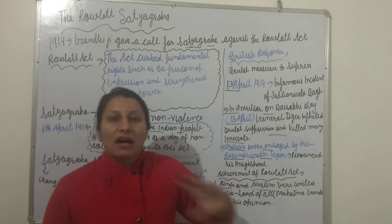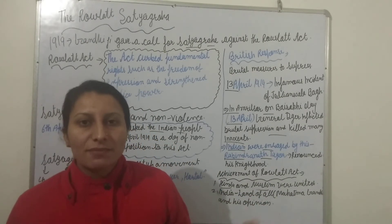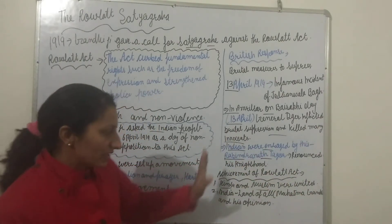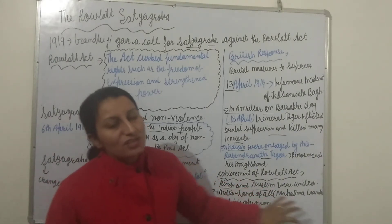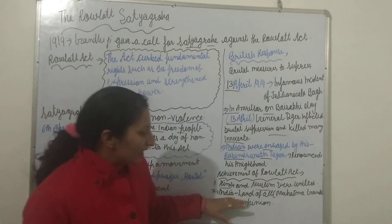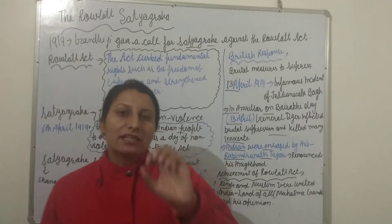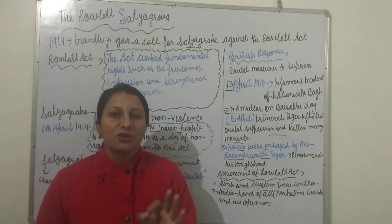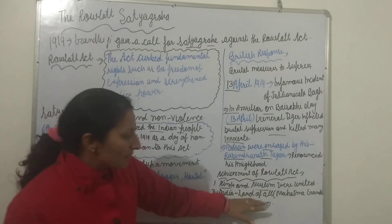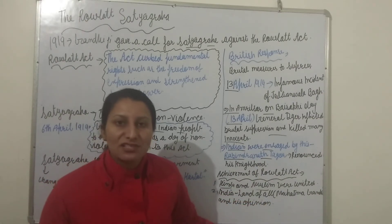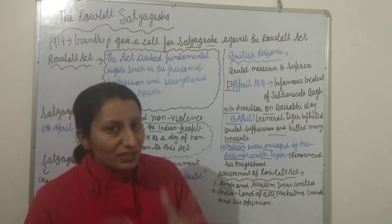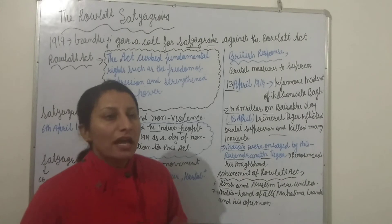Now Hindus and Muslims, all over the country, were united. All the Muslims were united and stood against the British government. Mahatma Gandhi's vision was working after this Rowlatt Act movement. Gandhi always said that India is not for one person — it is the land for all persons. The people of India followed his opinion, and their unity was created after this movement.